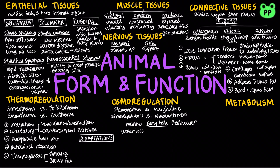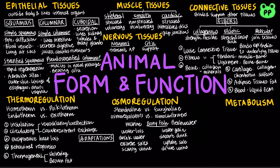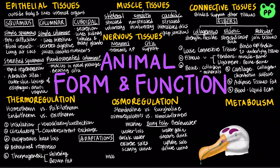Marine bony fish are hypoosmotic to water; they experience osmotic water loss, so they drink water, excrete salt ions, and produce scanty urine. Freshwater bony fish are hyperosmotic to water; they experience osmotic water gain, so they don't drink water but take in salt ions and produce dilute urine. Marine birds use nasal salt glands to remove excess salts.